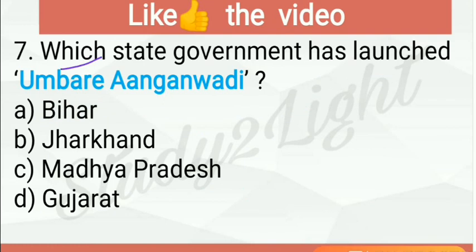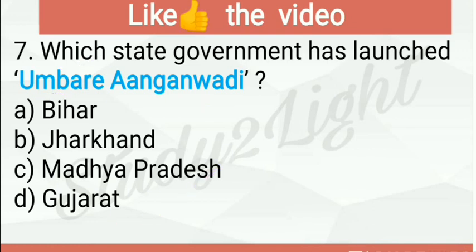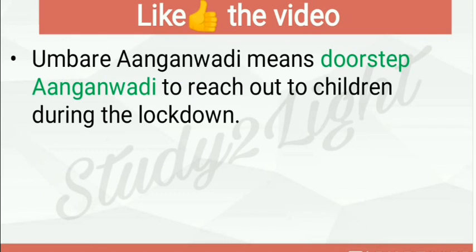Next question: which state government has launched Umbare Aanganwadi? So Umbare Aanganwadi has been launched by Gujarat state, so D is the right answer. Umbare Aanganwadi means doorstep Aanganwadi, launched to reach out to children during the lockdown.